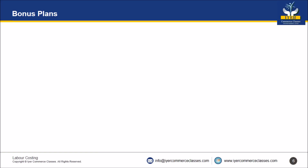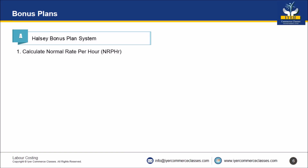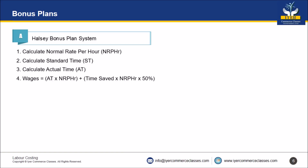Now we come to the third part of labour costing: calculation of bonus plans. For the Halsey bonus plan, step one: calculate normal rate per hour. Step two: calculate standard time. Step three: calculate actual time, which is normally given in the problem. Wages = (actual time × normal rate per hour) + bonus, where bonus = time saved × normal rate per hour × 50%.